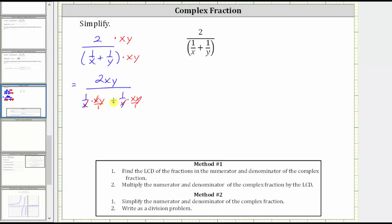Notice now we just have one times y plus one times x, which is y plus x, or using the commutative property of addition, we can write y plus x as x plus y. The complex fraction simplifies to two xy over the quantity x plus y.